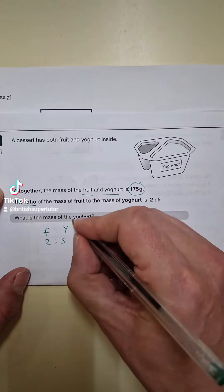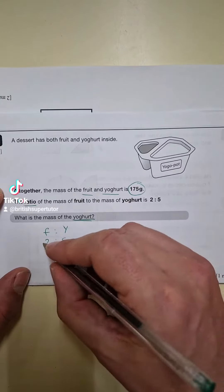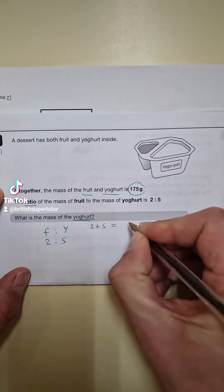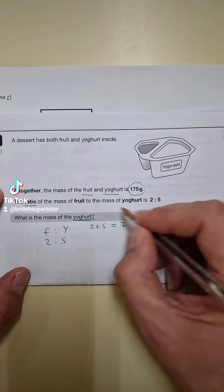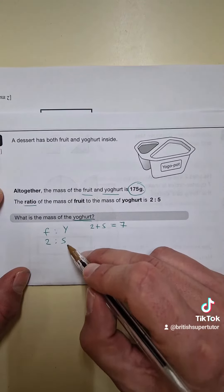What is the mass of the yoghurt? We're concerned with the mass of the yoghurt. Now to work this out, first we need to add together the ratio, 2 plus 5 equals 7. Now we're going to divide 175, divide it by 7, and then multiply that answer by 5.